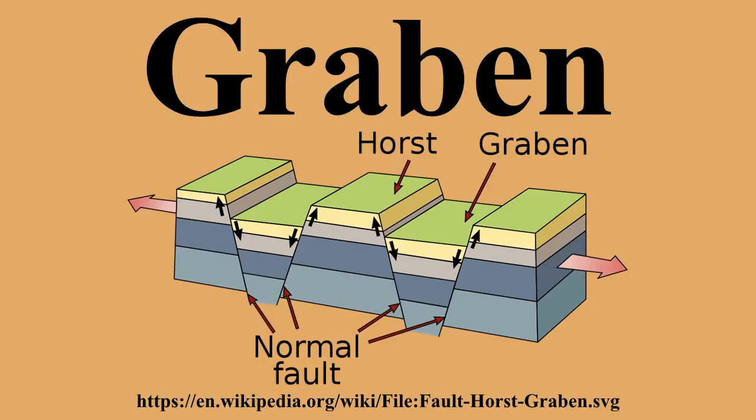Examples: The Basin and Range Province of southwestern North America is an example of multiple Horst-Graben structures, including Death Valley, with Salt Lake Valley being the easternmost and Owens Valley being the westernmost. The Rio Grande Rift Valley in Colorado, New Mexico, and Texas of the United States.